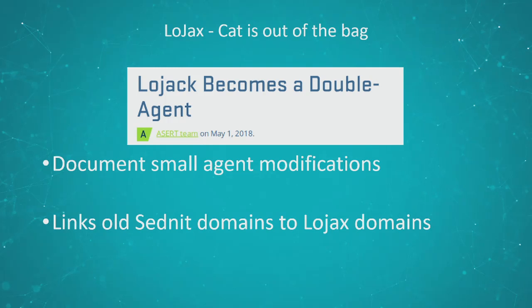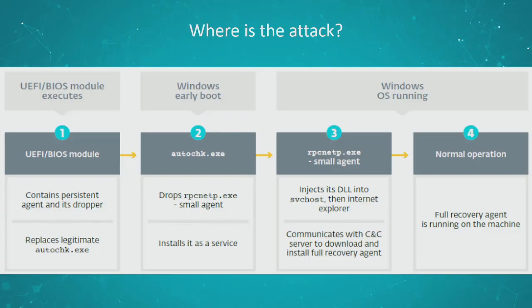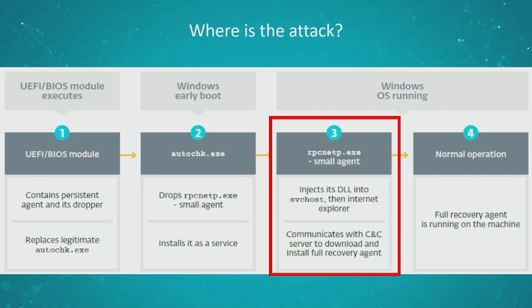That was the first thing indicating that these small agents might be related to Sednit. We thought about the most likely hypothesis for how the small agent would come to be on a system. Going back to the architecture slide, step three is a likely scenario — we already know that Sednit operators have a lot of backdoors at their disposal, so they could just use those backdoors to drop the small agent. Of course, you don't benefit from all the persistence mechanisms that the total LoJack solution gives you — you don't have the UEFI module — but since you're only changing a few bytes in the small agent and it is legitimate software, you're still benefiting from the fact that a lot of AVs are actually whitelisting this small agent.